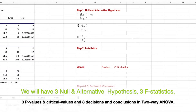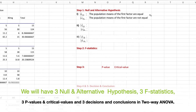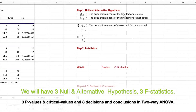For step one, we set up the hypotheses. For factor one (the row factor, gender): the null hypothesis is that the population means of the first factor are equal; the alternative is that the population means of the first factor are not equal. For factor two (the column factor, drug doses — 10MZ, 20MZ, 40MZ): the null hypothesis is that the population means of the second factor are equal; the alternative is that the population means of the second factor are not equal — in other words, the column categories are not equal.